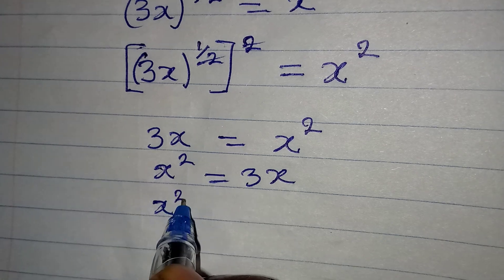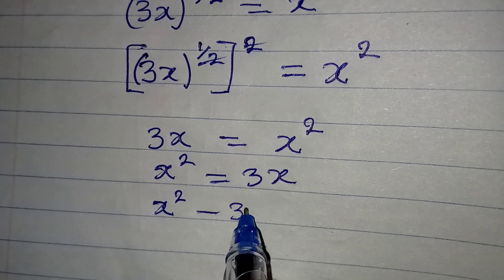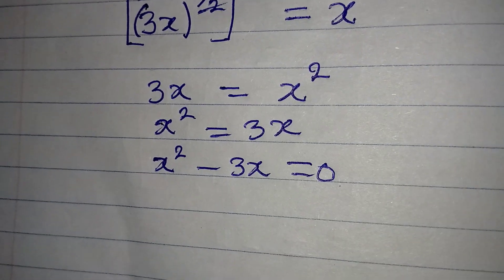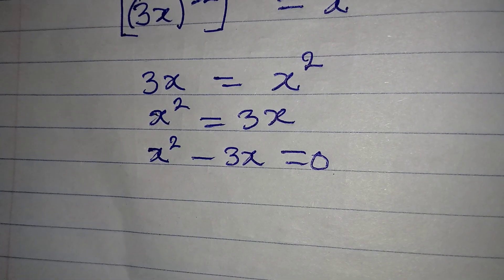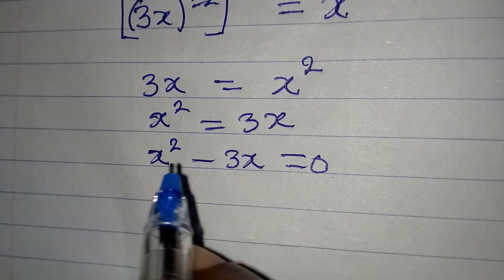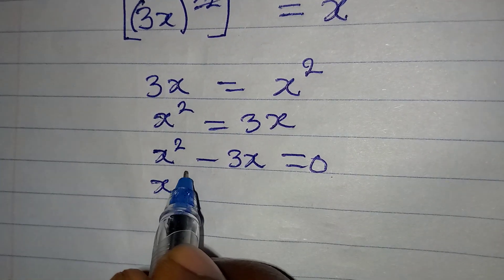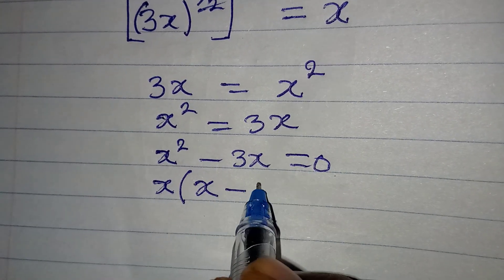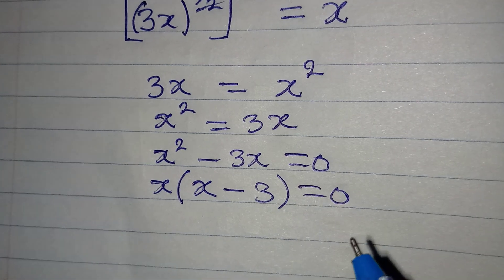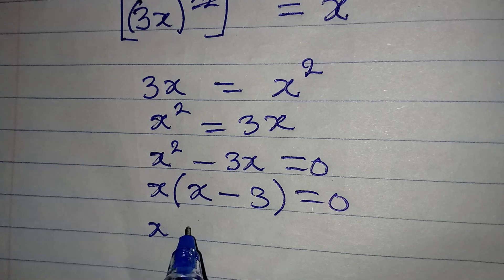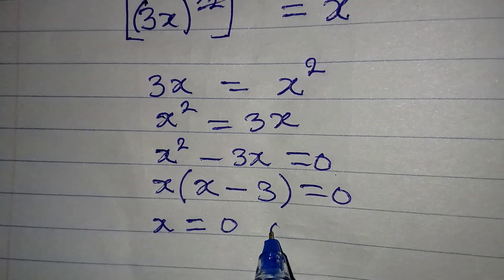So this is what you should do: x^2 - 3x = 0. And from here we can apply factorization method. If we factor out the x here, we have x(x - 3) and this will be equal to 0.